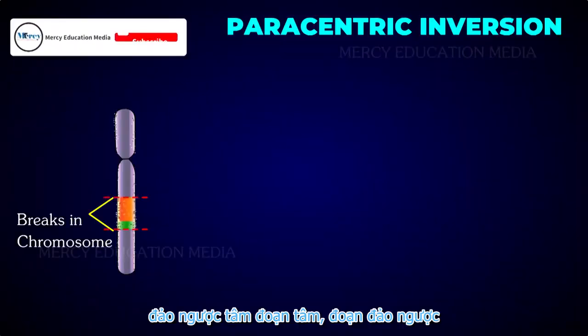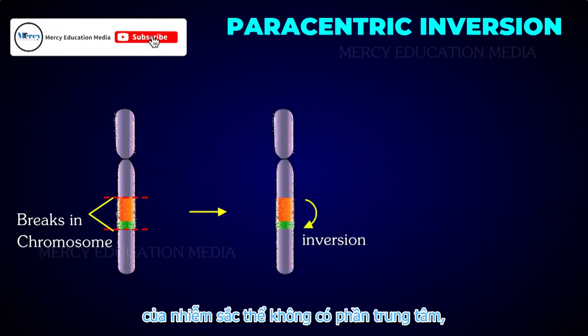In paracentric inversion, the inverted segment of a chromosome has no centromere.